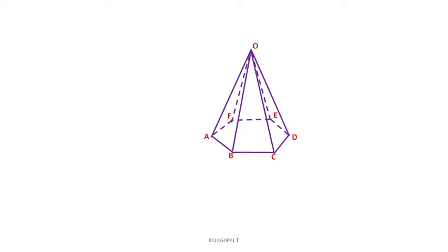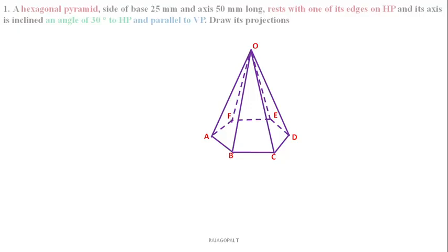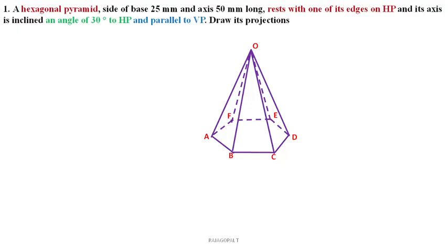Now let us discuss one question related to a hexagonal pyramid. Read the question: A hexagonal pyramid with side of base 25 mm and axis 50 mm long rests with one of its edges on HP, and its axis is inclined at an angle of 30 degrees to HP and parallel to VP. Draw its projections.